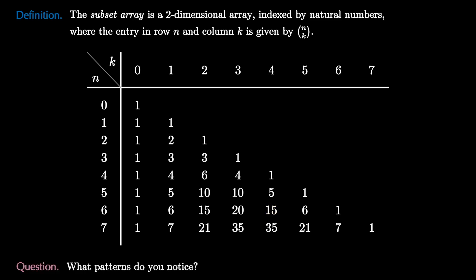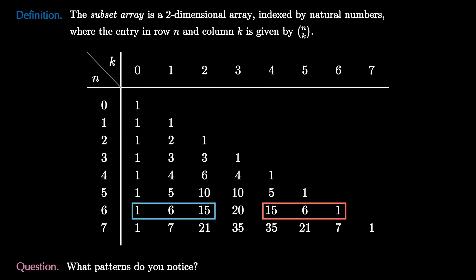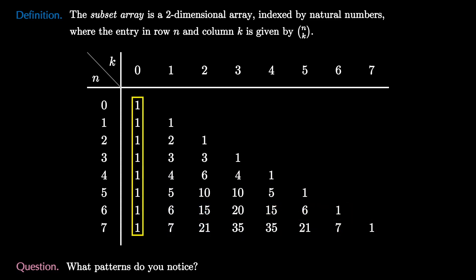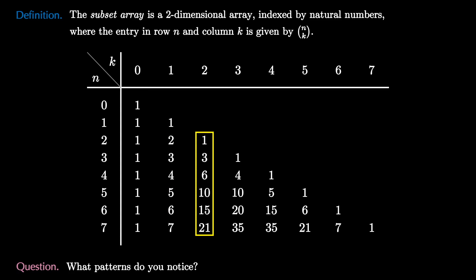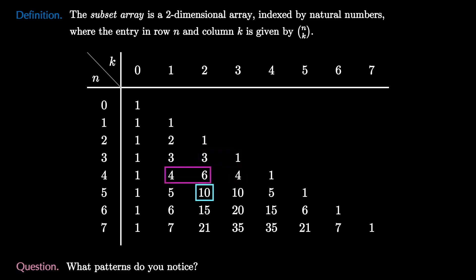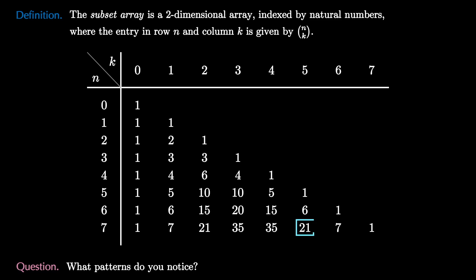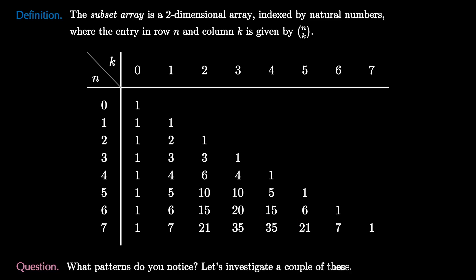Let's look for patterns in this array. The first thing I notice is that each row is a palindrome — it reads the same forwards as backwards. Can we prove this? Column 0 is again all ones, and column 1 is again the counting numbers. Can you find a formula for column 2? What about a formula for each entry in terms of previous entries — can you see a pattern between an entry and the two entries above it and above-left of it? This identity between elements is a bit more straightforward than the corresponding identity for permutation arrangements.